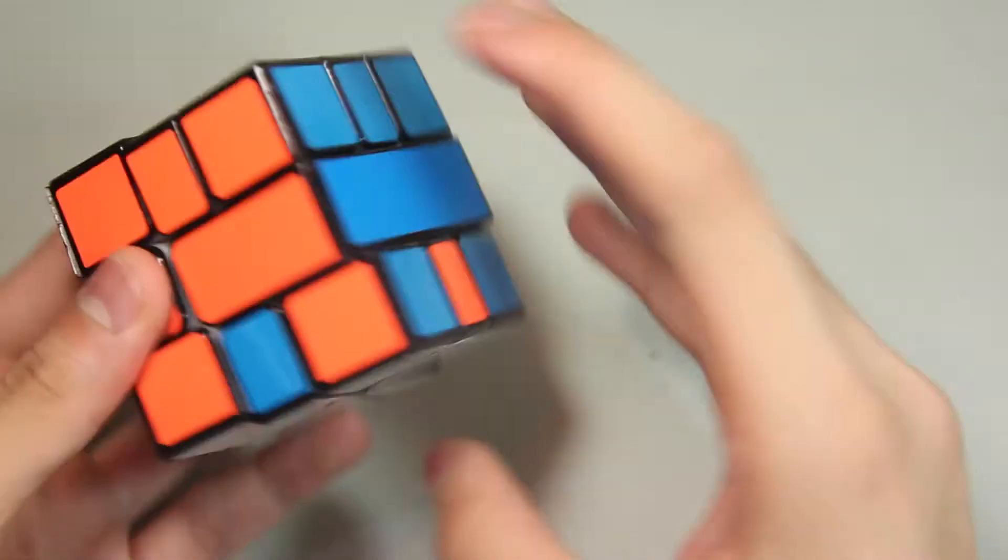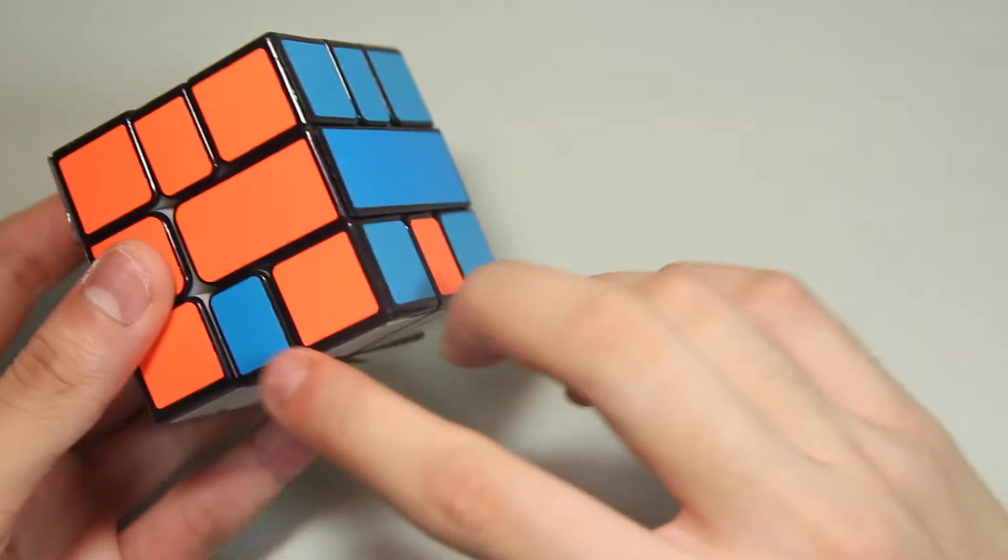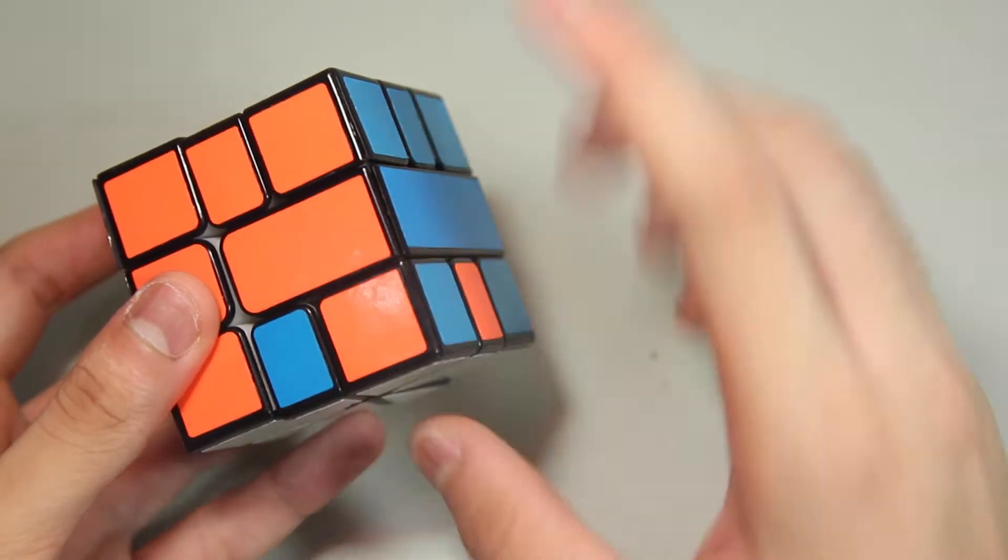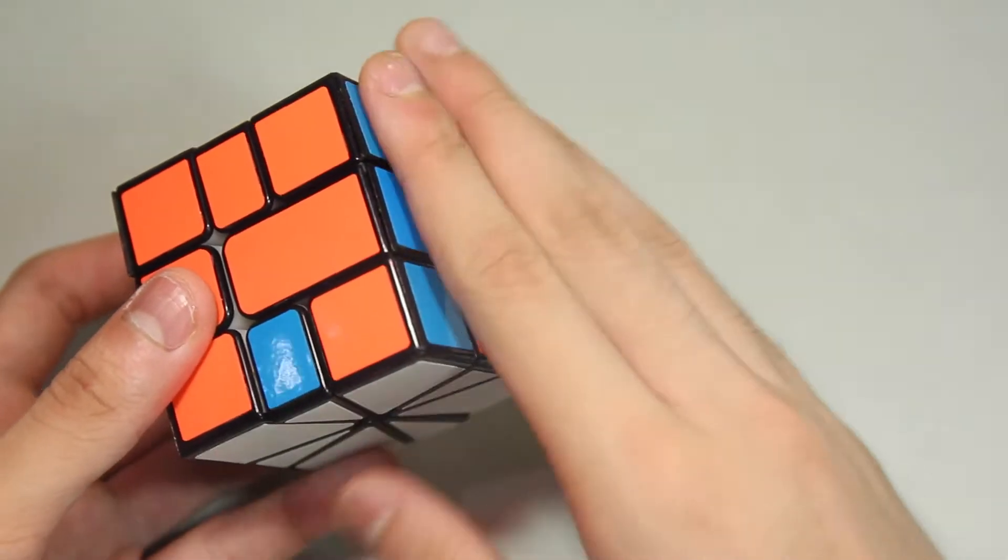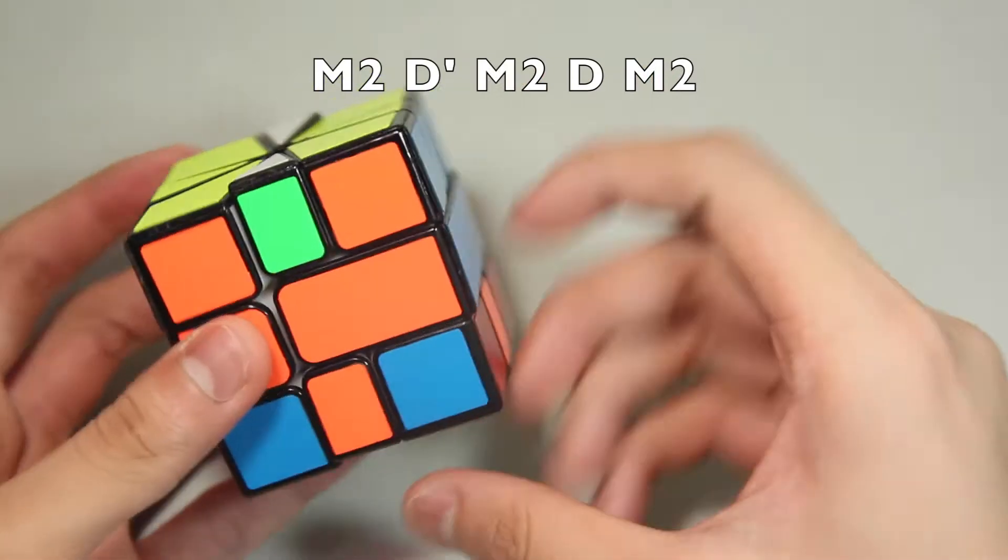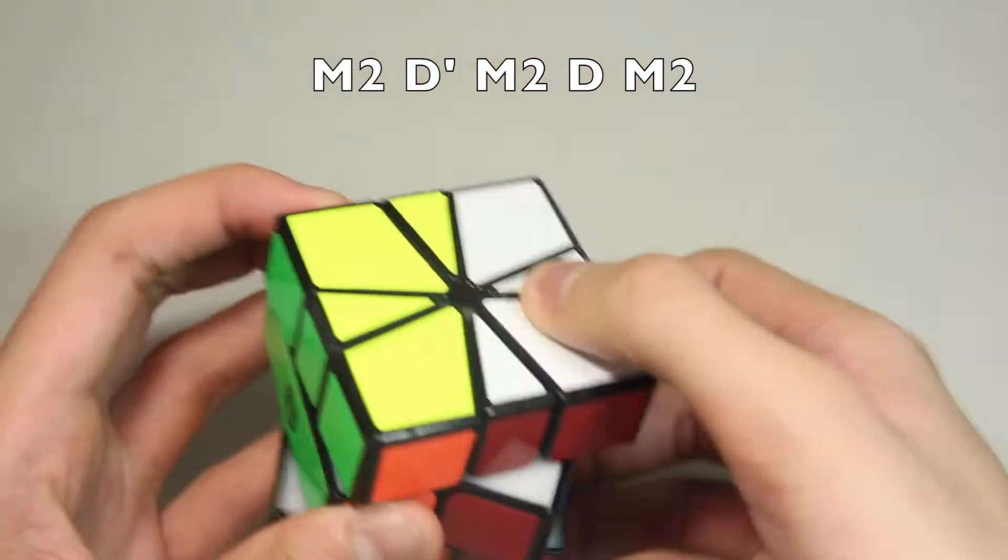The same thing applies for the bottom layer. Wherever you want to move this one, you just move the position to here. So basically, M2, D prime, M2, D, M2.